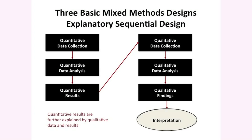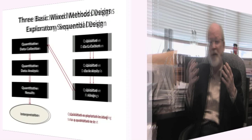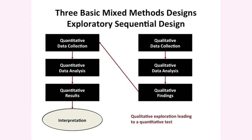The next is an explanatory sequential design, very popular in the social and health sciences. We start by collecting quantitative data, analyzing it, and then from those results we build in a second qualitative phase to follow up — the whole idea is to interpret the quantitative results using the qualitative data. We can also reverse this with an exploratory design, where we start qualitatively, explore and come up with findings, and then use those findings to follow up with a quantitative phase — for example, using qualitative findings to develop a new instrument. So I call it qualitative exploration leading to a quantitative test.